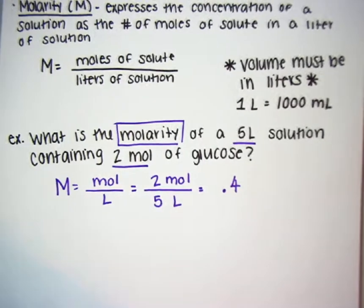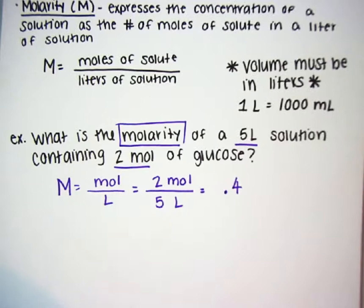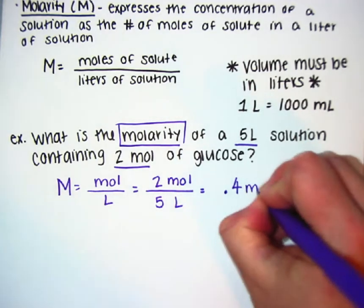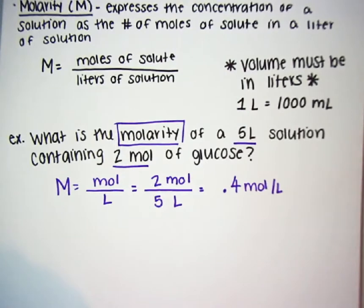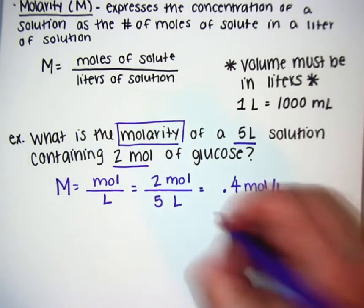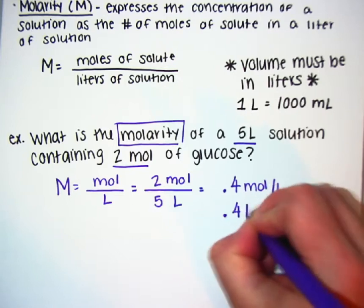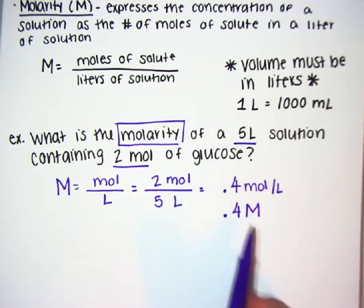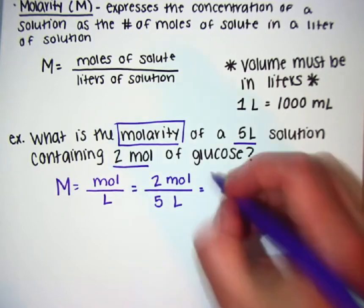Significant figures come into play. Each of these quantities has one significant figure, so my answer has one significant figure. You can either write your answer as 0.4 moles per liter, or more commonly, you're going to see 0.4 with a capital M — this would read 'molar.' So this is a 0.4 molar solution.